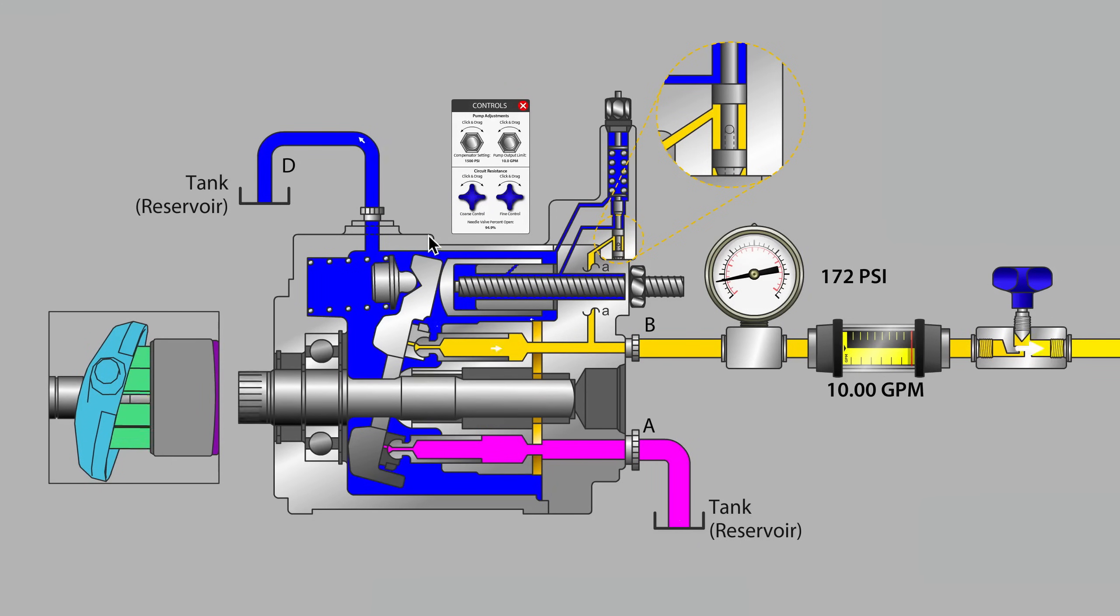And then there will be a third hose, sometimes the smallest of the three. This hose, referred to as the case drain line, usually leaves from the top of the pump's case and goes back to tank.